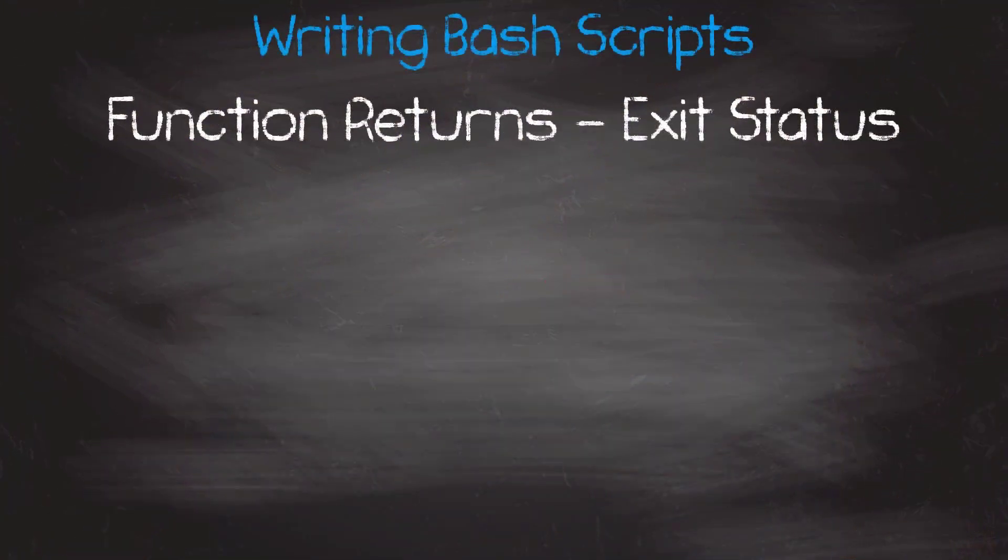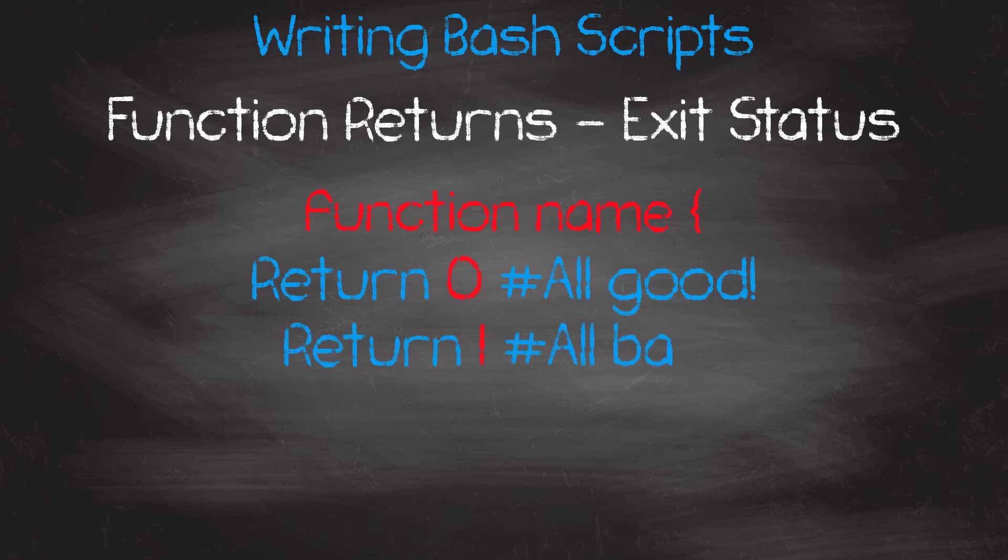And the last topic of this module. Return values. Bash is not like other programming languages in regards to returning values from a function completion. Bash functions don't allow you to return a value when called. When a bash function completes its return value is the status of the last statement executed in the function, with 0 for success and any other value from 1 to 255 for failure. The return status can be specified by using the return keyword, and it is assigned to the variable dollar question mark. The return statement terminates the function.